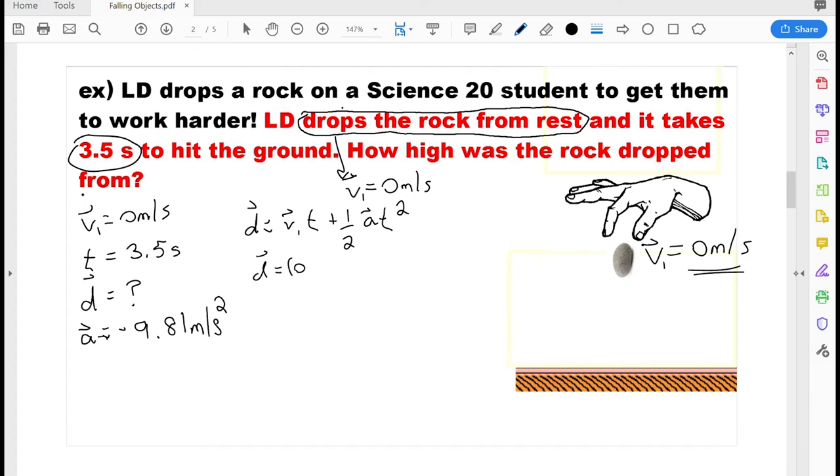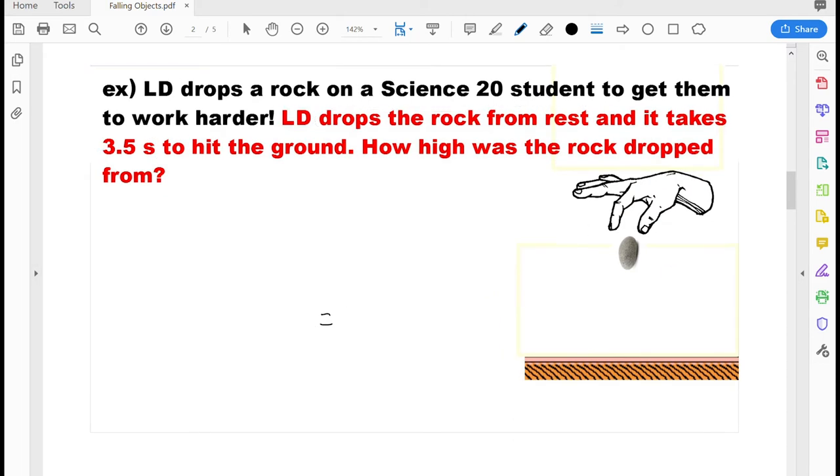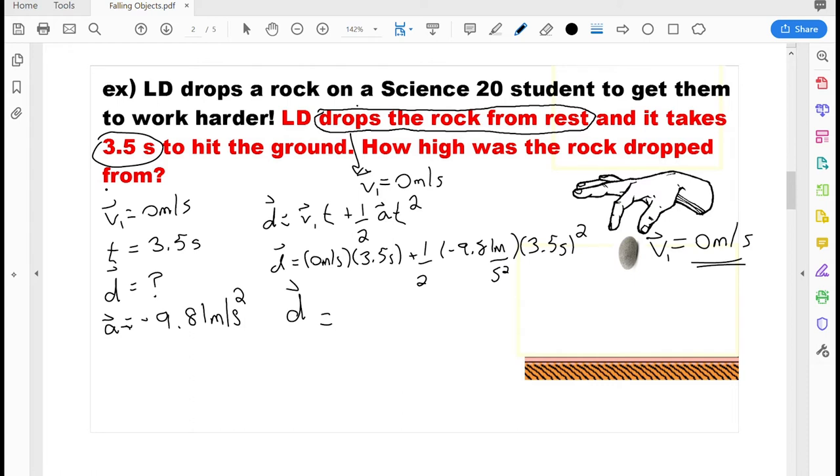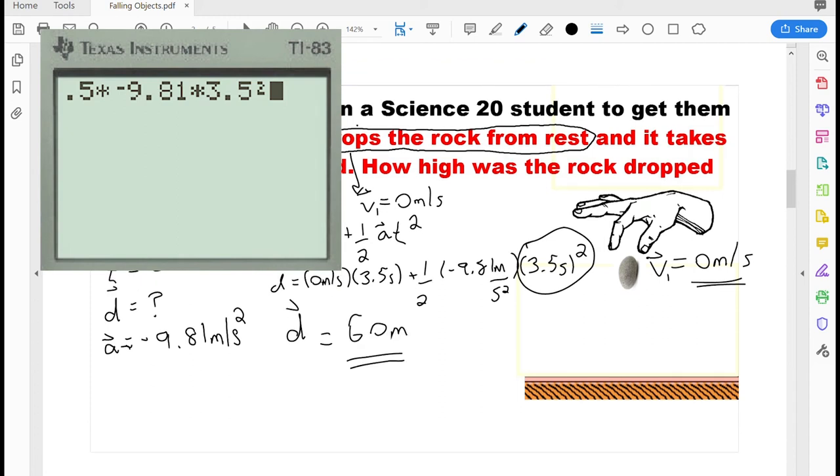In place of vi, I'm going to put 0 meters per second. Time was 3.5 seconds plus 1 half multiplied by the acceleration. That's negative 9.81 meters per second squared multiplied by the time. So that was 3.5 seconds. And there's a squared on that time. So we're going to make sure that we type that into our calculator. Now 0 times 3.5, that's just going to be 0. So you don't even have to worry about typing that into your calculator if you don't want to. You could just type in the 1 half times negative 9.81 times 3.5 squared. And make sure you only square the 3.5 when you do that.